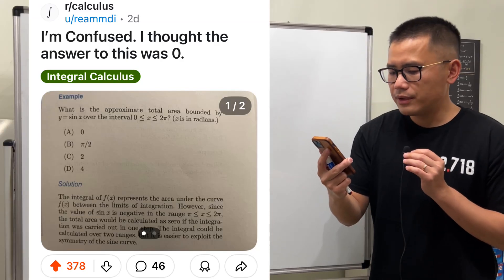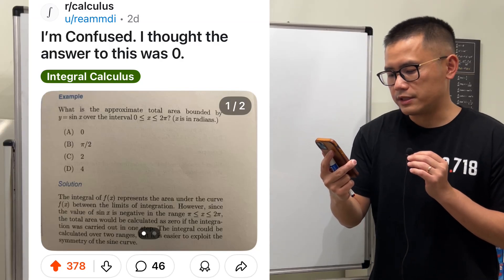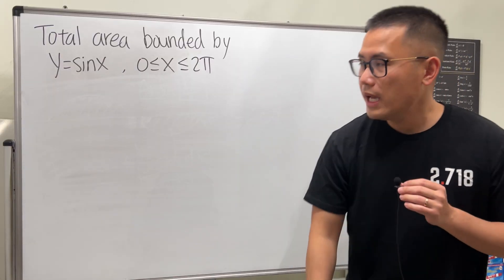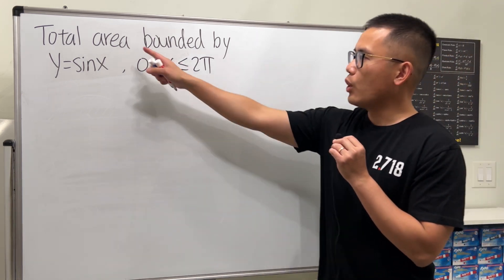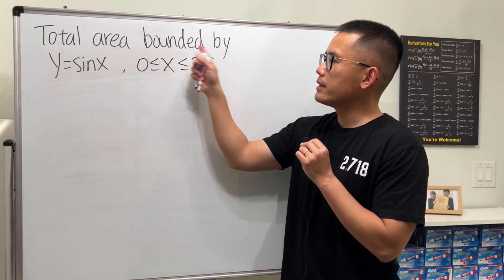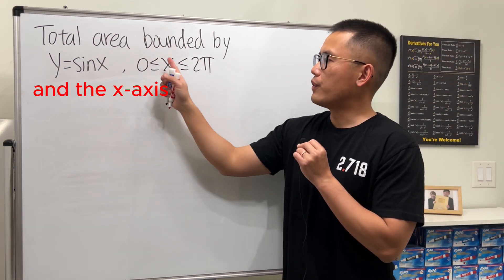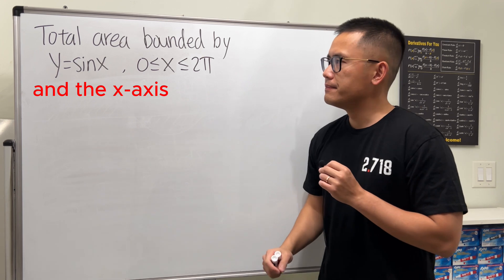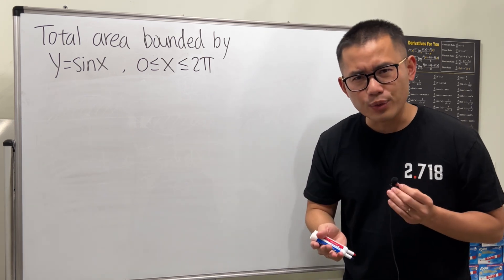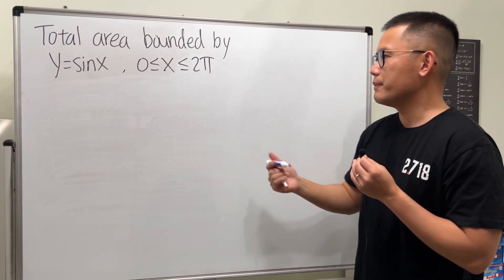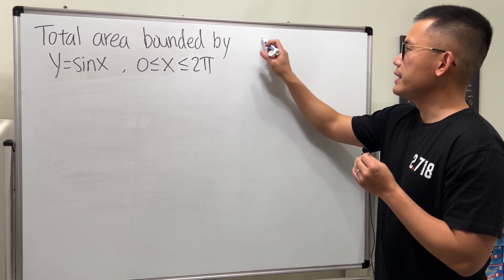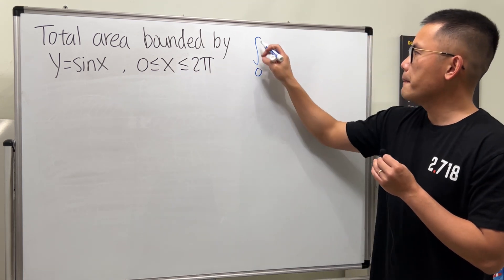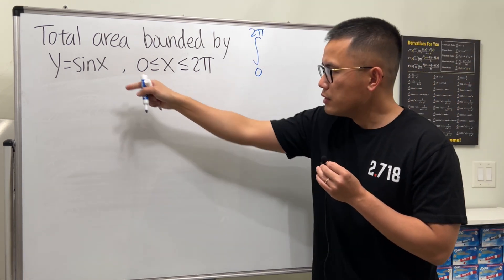I'm confused — I thought the answer to this was zero. Okay, let's take a look. We are going to find the total area bounded by y = sin(x) from zero to two pi. For area, we should use an integral. Let's go ahead and integrate from zero to two pi.